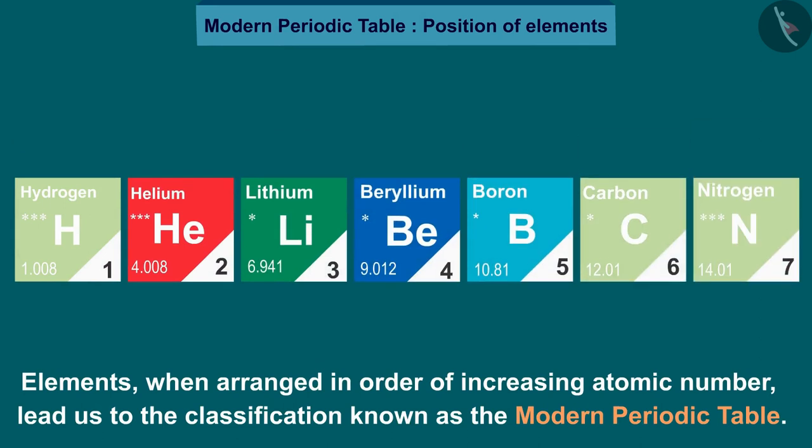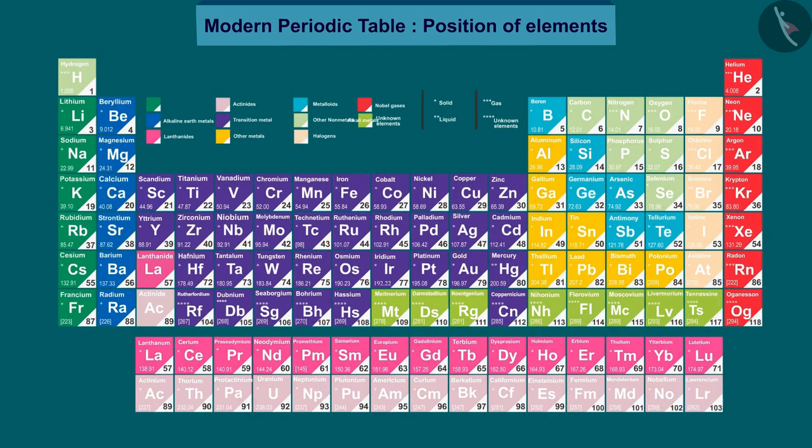Now we can see that the modern periodic table takes care of three limitations of Mendeleev's periodic table. The anomalous position of hydrogen can be discussed after we see what are the bases on which the position of an element in the modern periodic table depends.